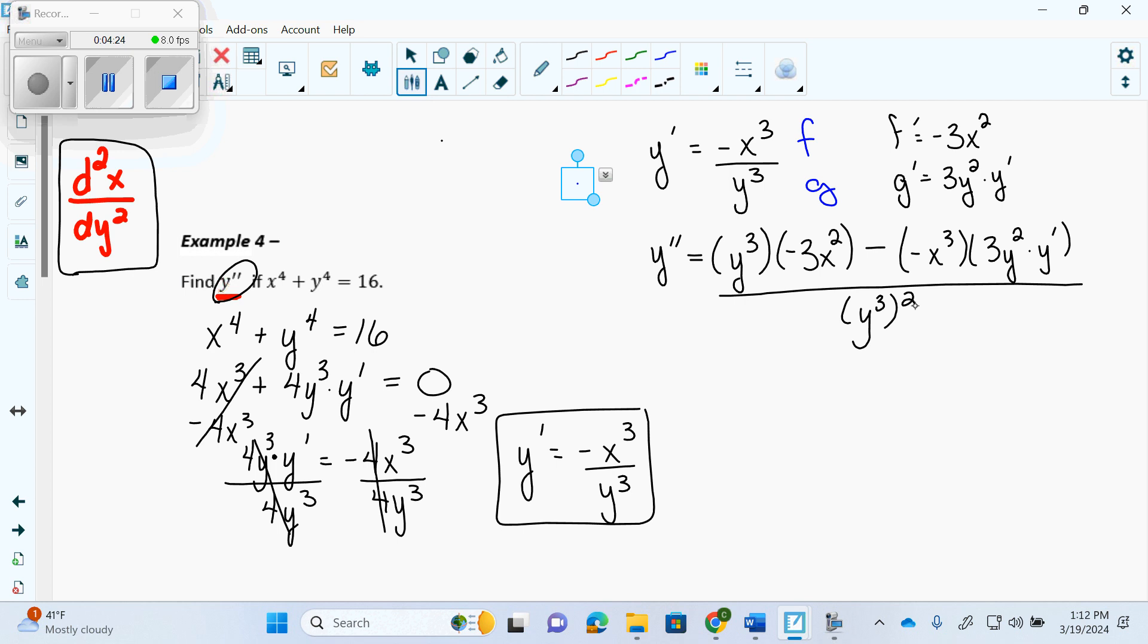Now I'm going to simplify that up a little bit. So I'm going to get y double prime equals negative 3x squared y cubed. This is a multiplication. I can write it in any order I want. Minus and minus. So I'm going to go plus 3x cubed y squared y prime over y to the 6th. Now, great answer. Won't be there. Because this is the only one where when I find the second derivative I need the first derivative to fix it.